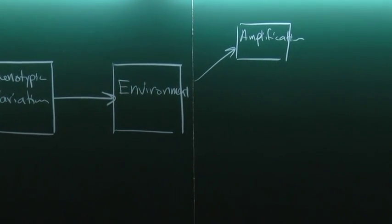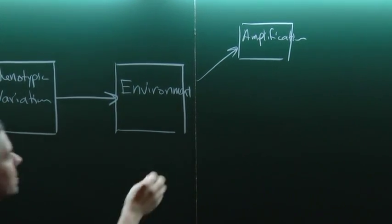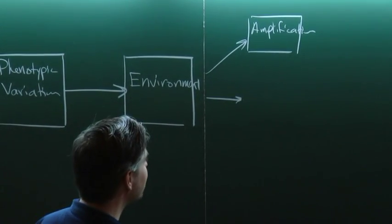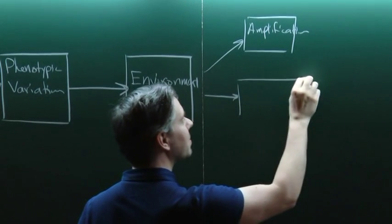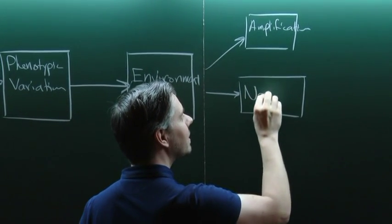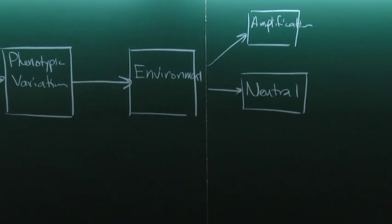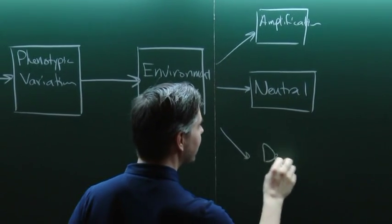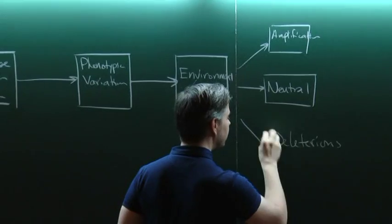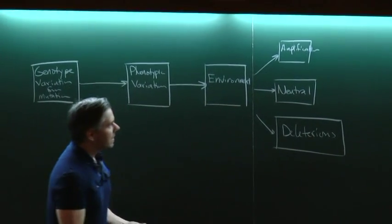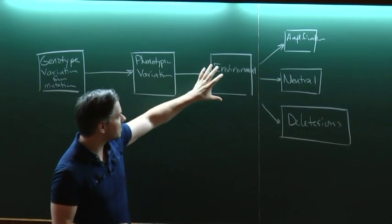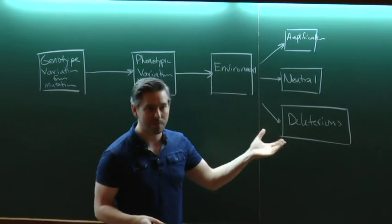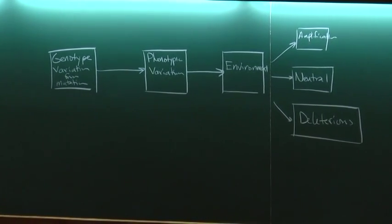You can also have some mutations that essentially do nothing — the mutation doesn't affect the frequency with which that particular individual shows up in the population, so that would be a neutral kind of thing. And then you can also have mutations which are bad for the individual — those are deleterious. As a result of how the organism interacts with its environment, that affects how it's able to proliferate and evolve the demographics of the population.